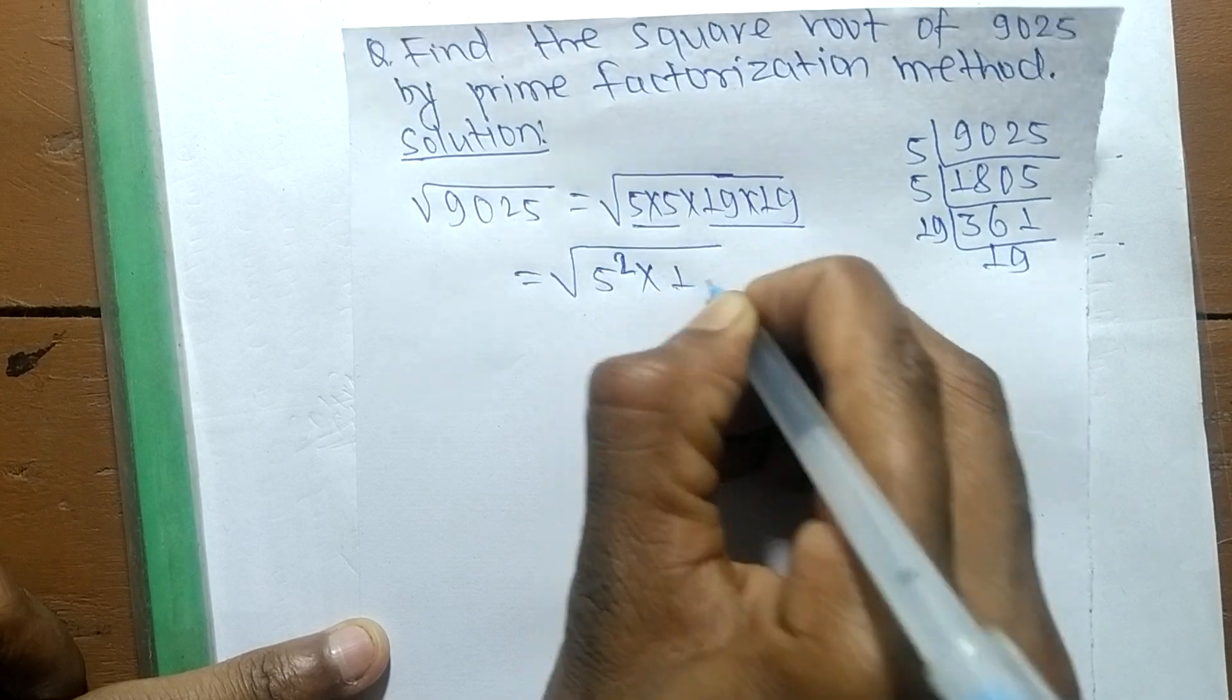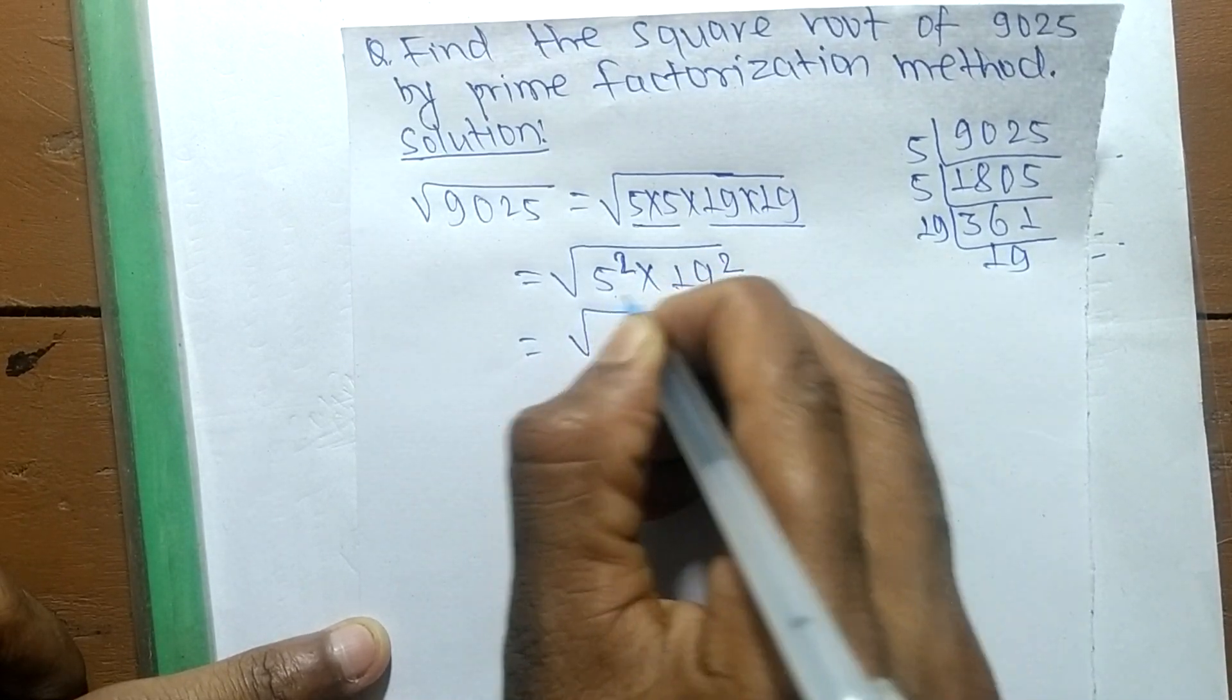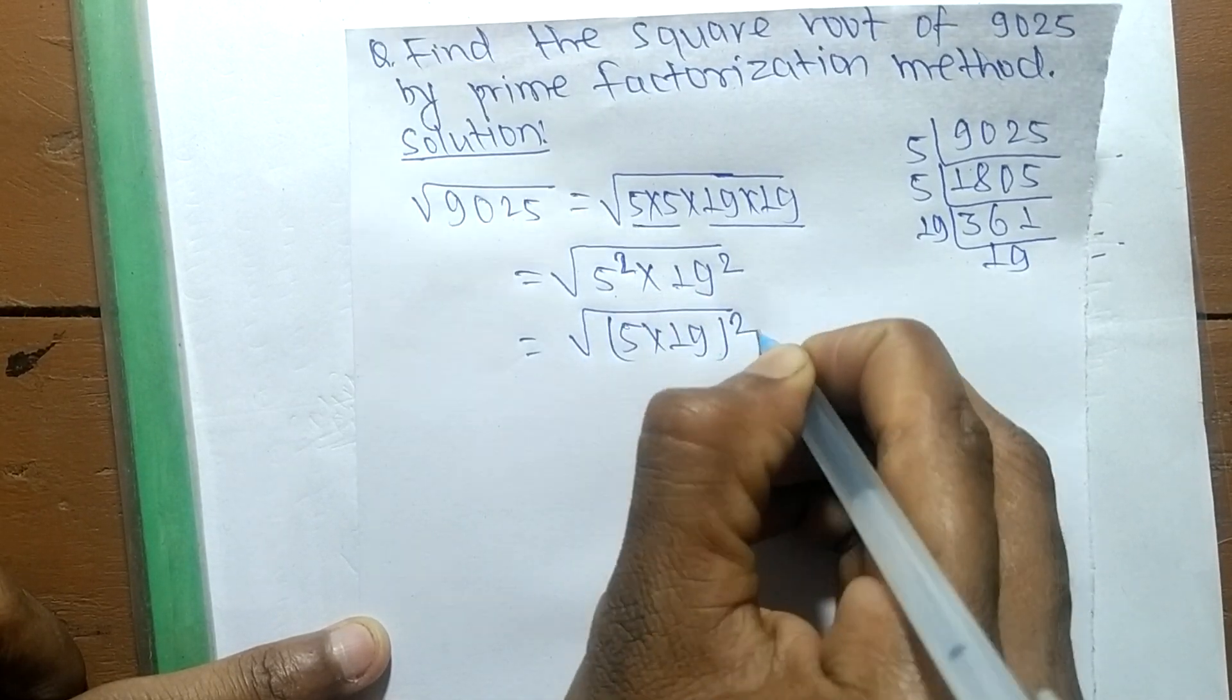Since squares are present in both, we can combine them: (5 × 19) whole squared.